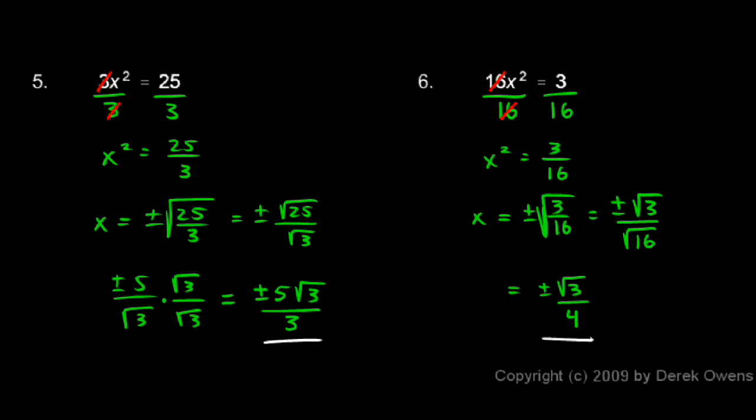For both of these, if needed I could get a decimal approximation. But if I'm not asked for one, I'll simply leave the answer like this, because these are exact answers — what's called simplified radical form. We simplified the square root of 16, we rationalized the denominator, and we simplified the square root of 25 to give us the 5. Everything is simplified as much as we can, and it's left in radical form, which is the exact answer. This is typically how a math teacher wants you to leave your answer — the exact answer in simplified radical form rather than a decimal approximation.